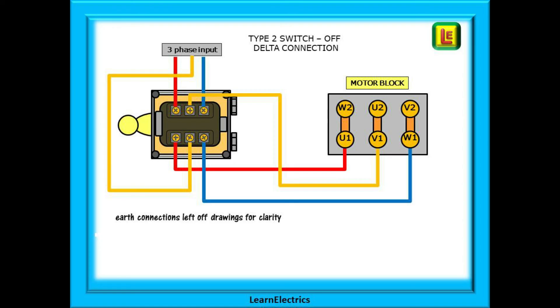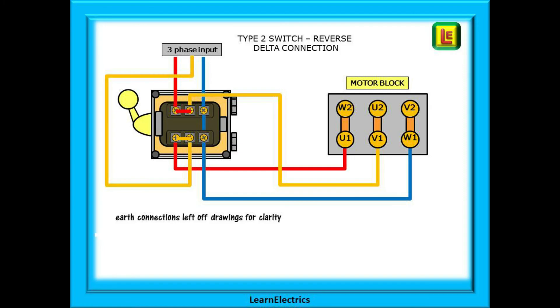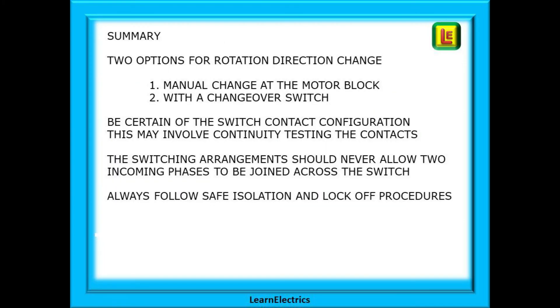With the motor block in delta configuration, the type 2 switch works just the same as in star. Here it is shown in the off position. And here it is in the forward position, all straight through connections. And finally in the reverse mode with the switch contacts in the parallel positions. And that is all there is to it.